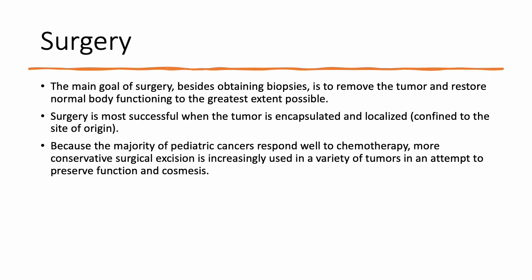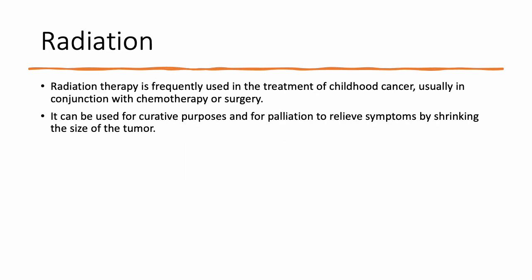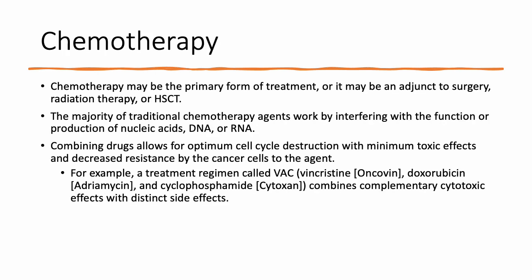The main goal of surgery is to obtain biopsies and remove the tumor so that it's not pressing on things and creating abnormal function. Surgery is most effective when the tumor is well encapsulated or smaller and just localized. Radiation therapy is also frequently used in the treatment of childhood cancer, for either curative or palliative purposes. Chemotherapy is probably the most well-known treatment for any kind of cancer but can be provided in conjunction with other types of treatment. The majority of chemotherapy agents interfere with something inside the cancer cells to destroy them.